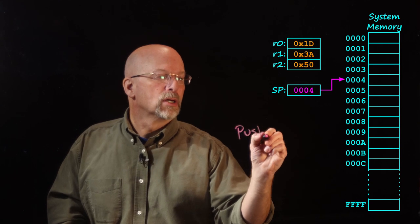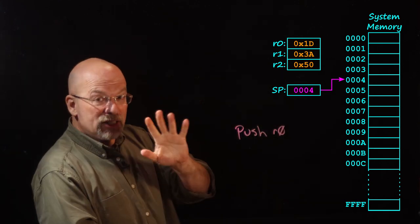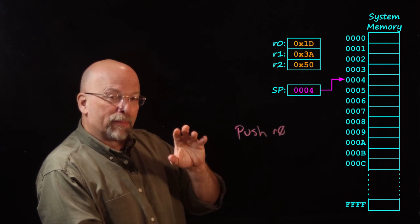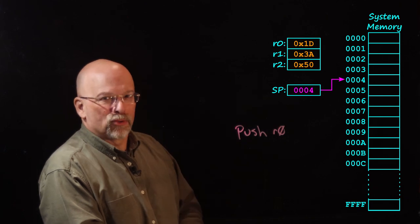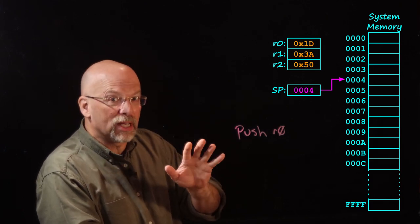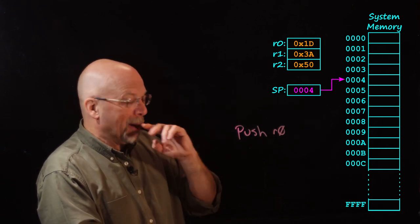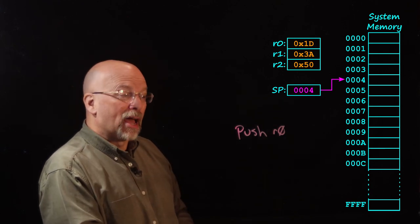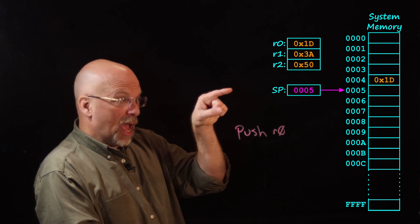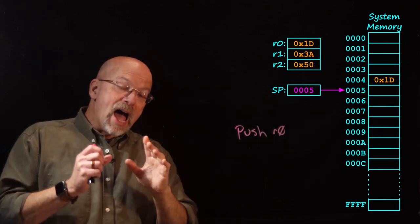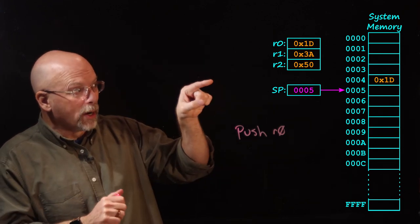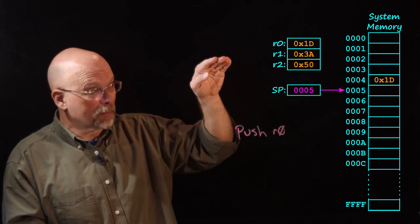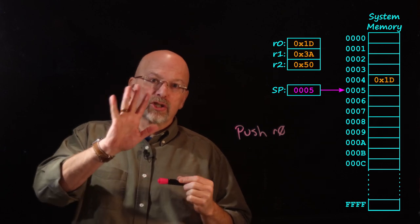Let's go ahead and push R0. I've got only three registers, and I need to do a lot of computation, so I need to free up those registers without losing what's in them. Those values 1D, 3A, 50 are important. So I do push R0, which takes the value in R0 and stores it into address four. Then, because we have a post-increment, after storing R0 into address four, I modify the stack pointer so it's pointing to the next memory location — the next place to store a value.